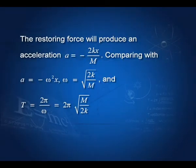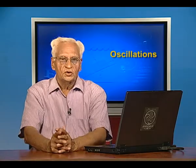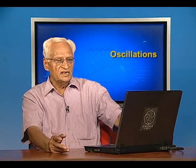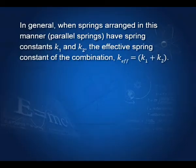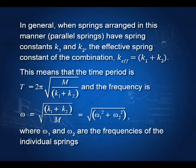In general, when springs are arranged in parallel, the effective spring constant is k_eff = k₁ + k₂. The angular frequency is ω = √((k₁ + k₂)/m) = √(ω₁² + ω₂²).